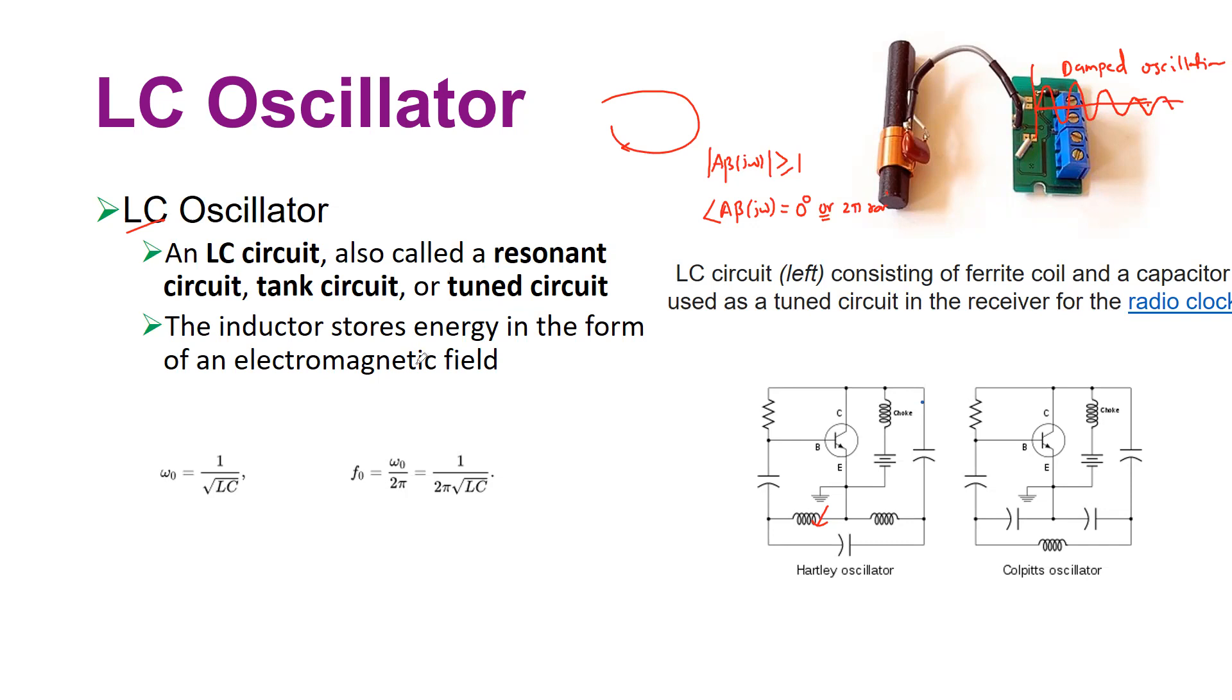LC tank circuit is also called a resonant circuit, tank circuit, or simply tuned circuit, and is very commonly used in the radio receiver's clock as a clock or as a filter to filter out the specific frequency components. Remember, inductor storing energy in the form of electromagnetic field, capacitor storing energy in the form of electrostatic field.